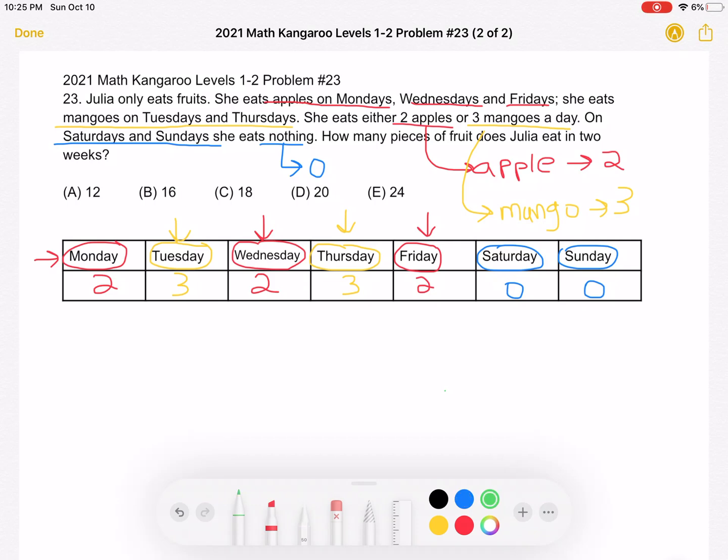So in the problem, we see that we're trying to find the number of pieces of fruit she eats in two weeks. Let's start with finding the number of pieces of fruit she eats in one week. And that's equal to two plus three plus two plus three plus two, which is equal to 12.